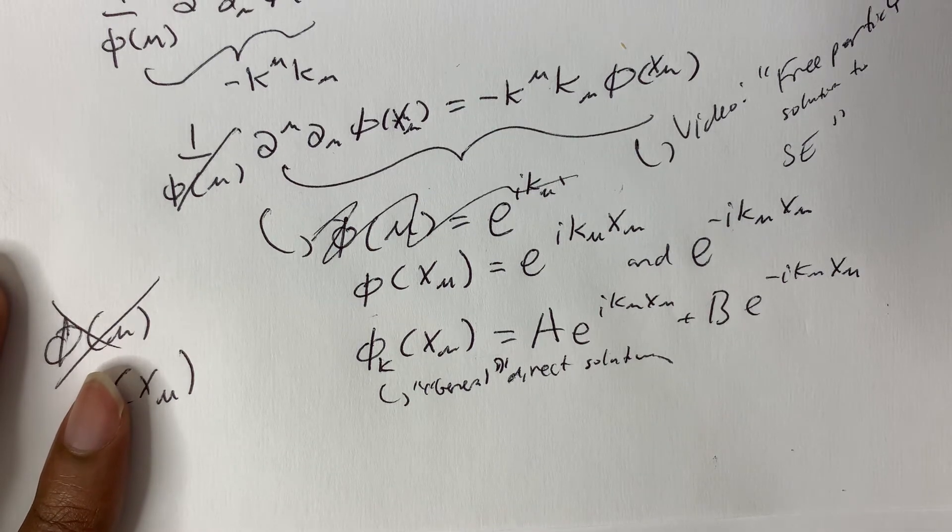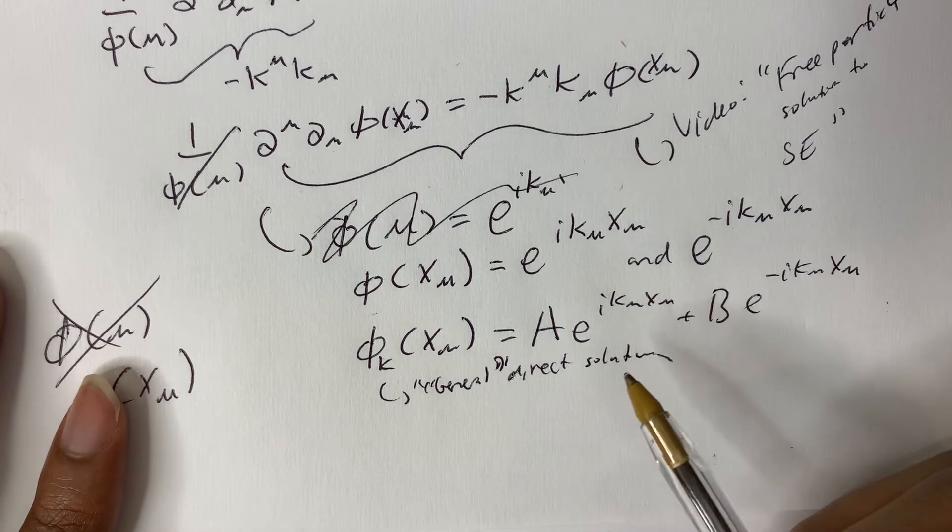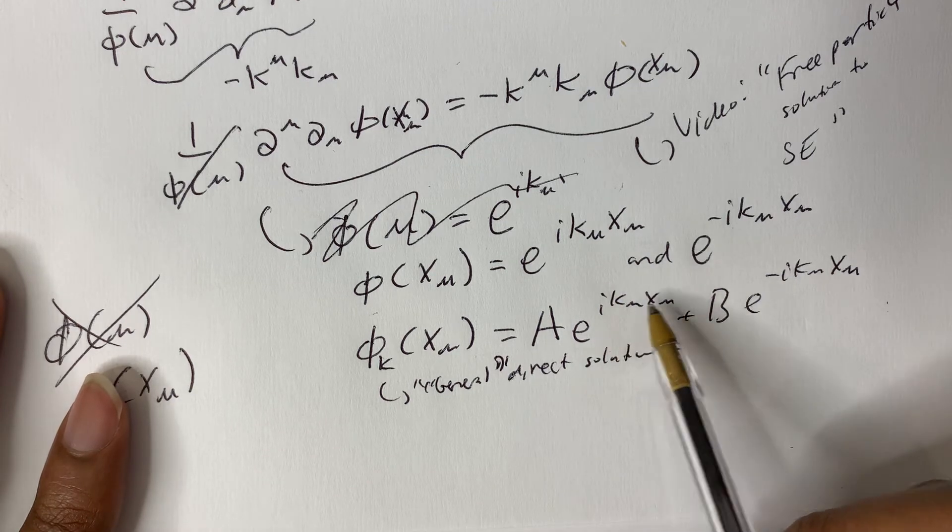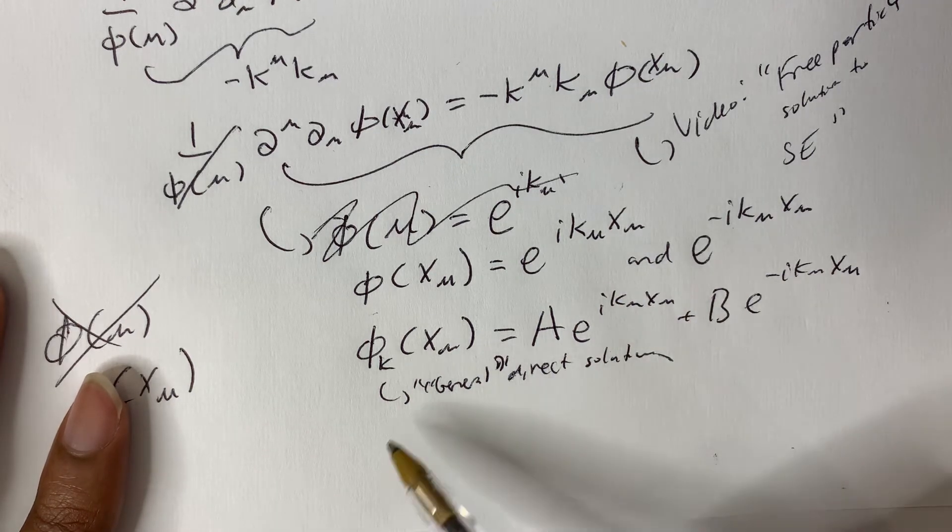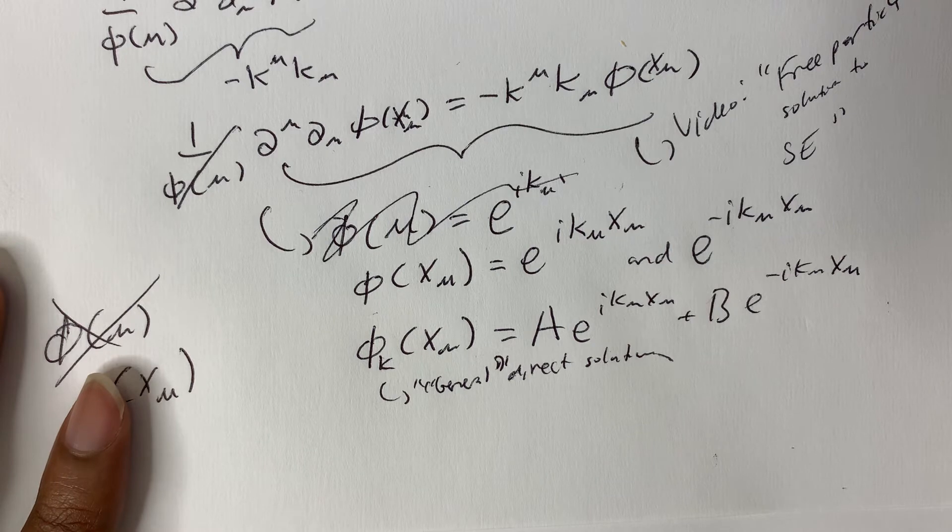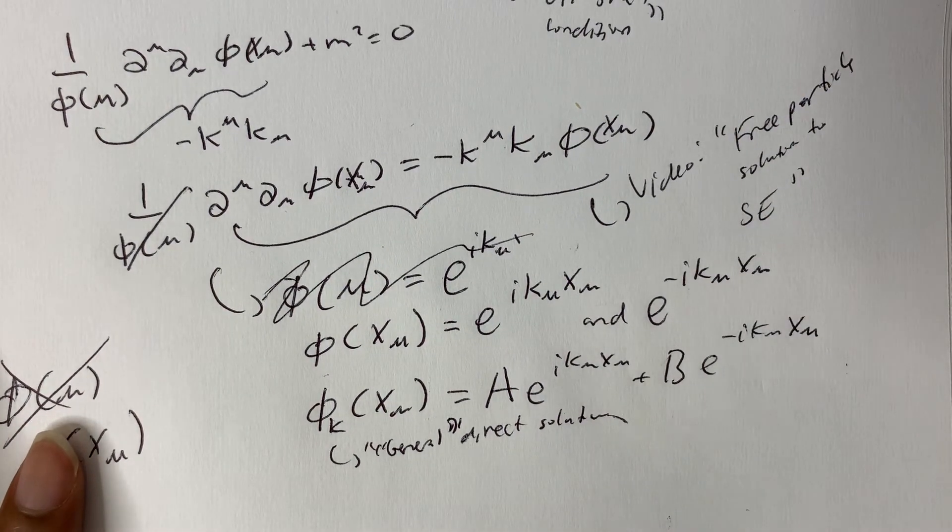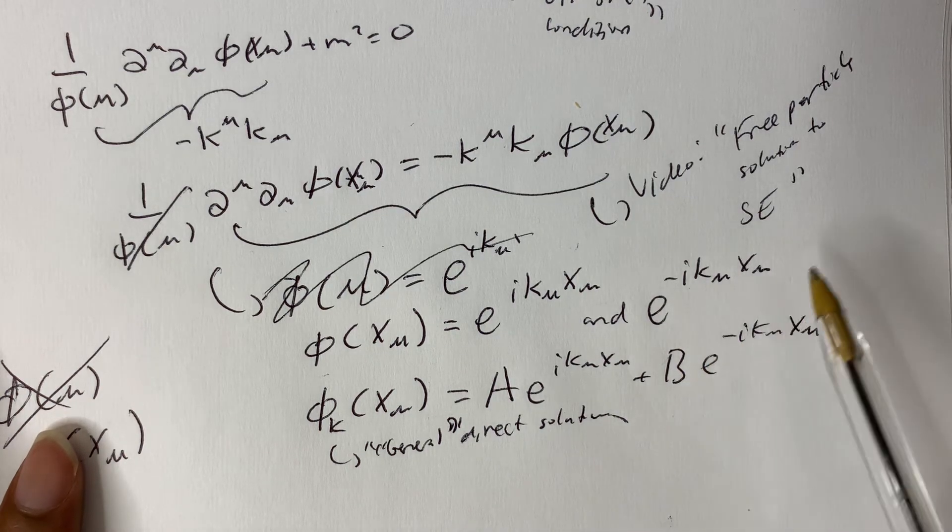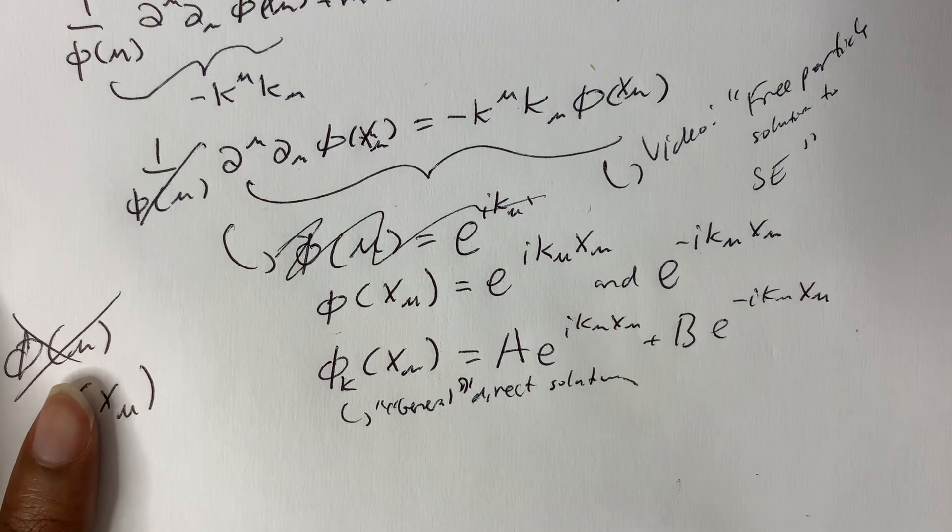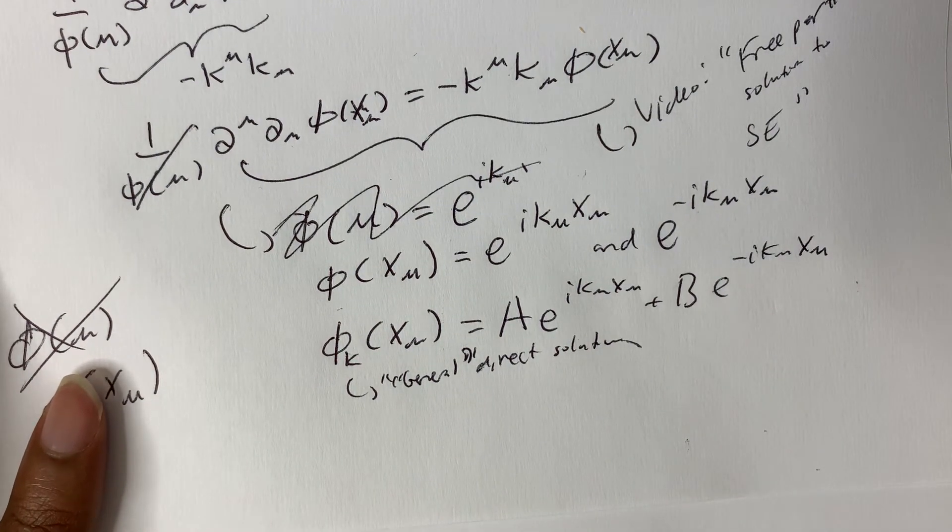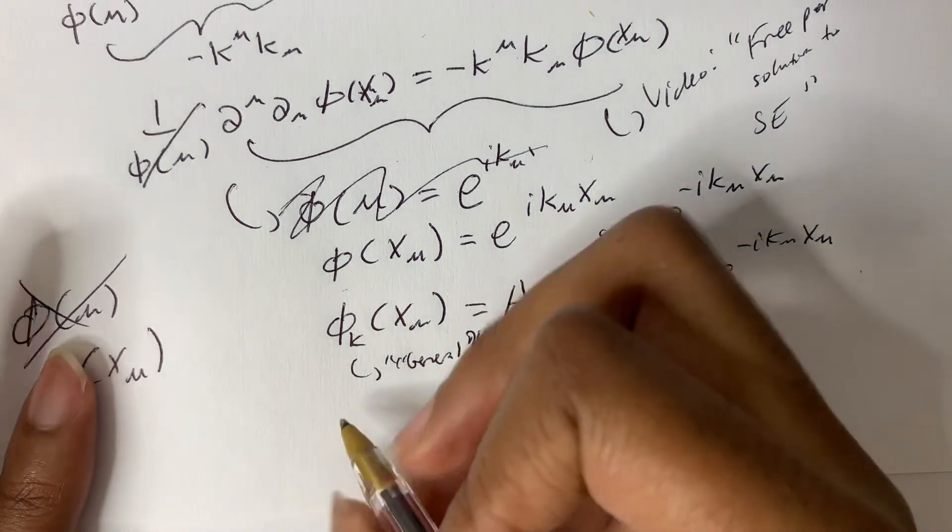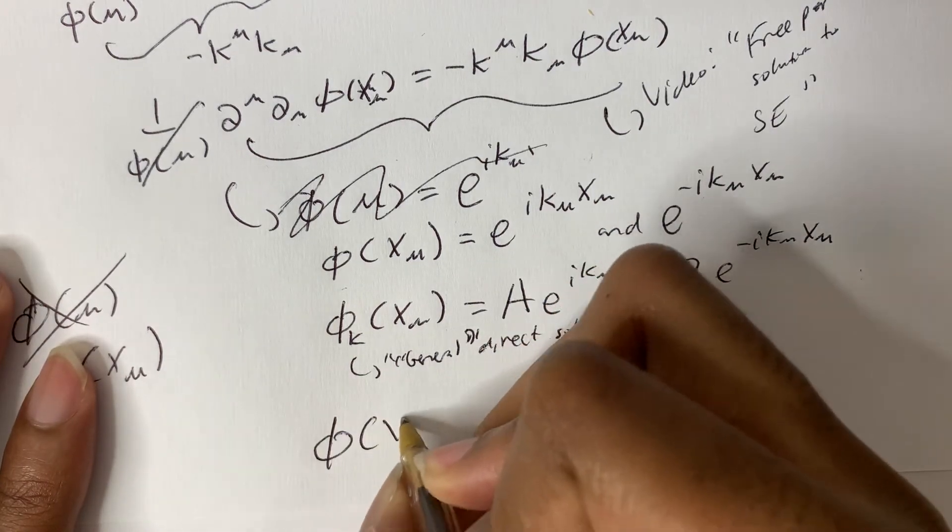And then we can take superpositions of this one state to get another valid solution to the Klein-Gordon equation. And since k mu is a continuous variable, the summation that we'd use for a superposition would just be an integral. That part seems a bit complex to you guys. Again, this video, it's really solving the Klein-Gordon equation and the free particle solution for the Schrodinger equation, they're really similar. We do the exact same thing, because the equations of motion is the same.